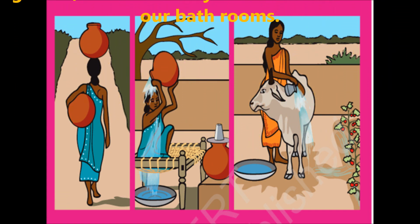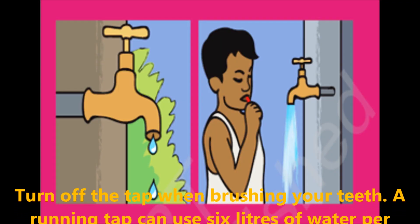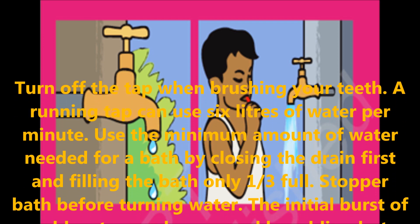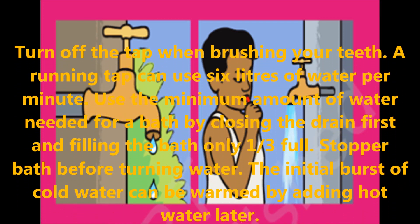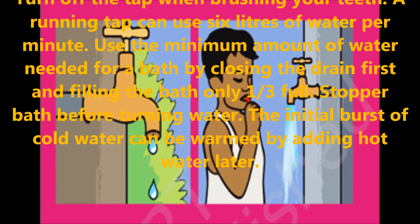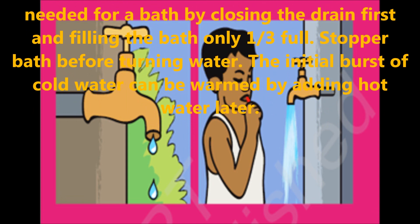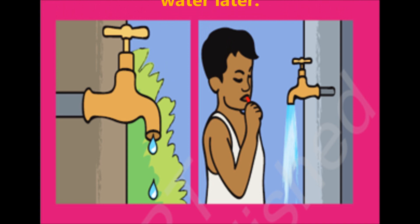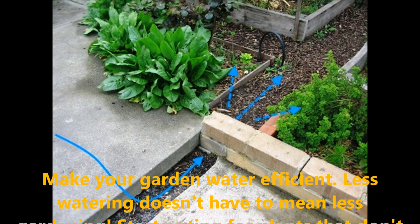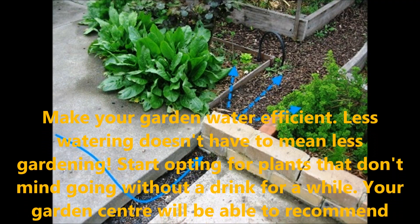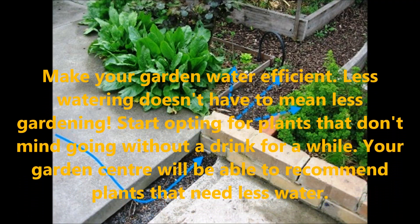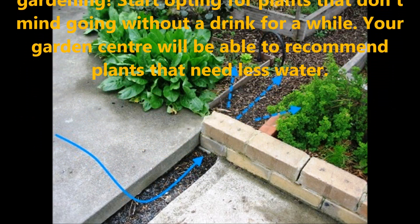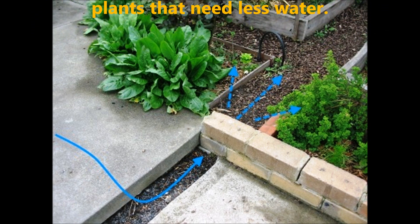Let us see how we can save water. Turn off the tap when you are brushing your teeth — a running tap uses 6 liters of water per minute. Use the minimum amount of water needed for a bath by closing the drain first and filling the bath only one-third full. Stopper the bath before turning on the water, as the initial cold water can be warmed by adding hot water later. Make your garden water-sufficient — less watering does not have to mean less gardening. Start choosing plants that do not mind going without water for a while, and your garden center can recommend plants that need less water.